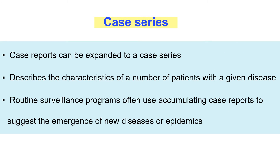When we gather a few reports of cases having the same health condition, it becomes a case series. It helps us describe the characteristics of a number of patients with a given disease. We can often accumulate information on these groups of cases from routine surveillance data, and it helps us understand whether there is any emergence of a new disease or epidemic.